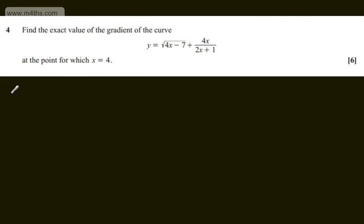So let's just rewrite this to begin with. y is equal to 4x minus 7 to the power of 1 half, plus our quotient of 4x over 2x plus 1.